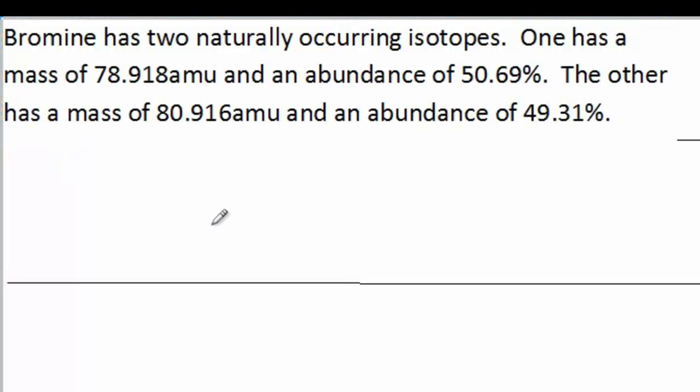Let's try another type of isotope problem. This is more of a quantitative type of problem with calculations. Bromine has two naturally occurring isotopes.